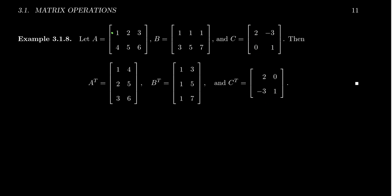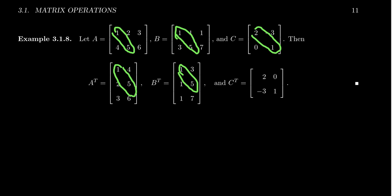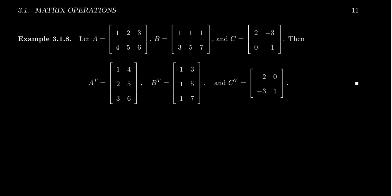Another thing I want to mention is that when you compare a matrix with its transpose, the main diagonal doesn't change. When you look at A here, you get 1 and 5 as the main diagonal — same thing for B, you get the main diagonal of 1 and 5. For C, your main diagonal is 2 and 1, and that stays the same. Some people like to think of it as follows: when you take the transpose of a matrix, you're reflecting the matrix across the main diagonal. That's a good perspective to take here.